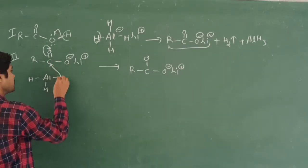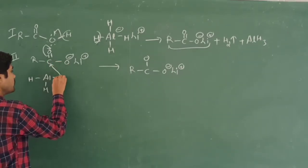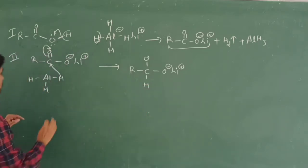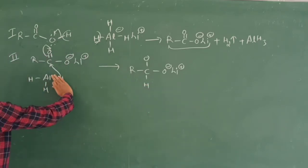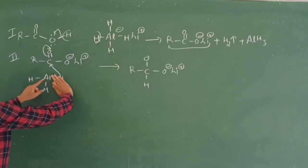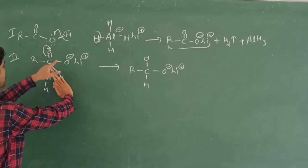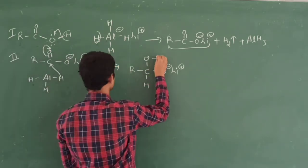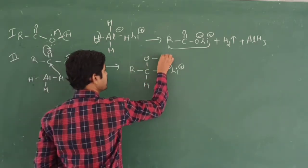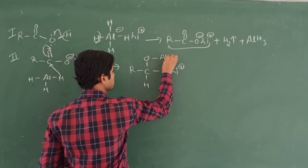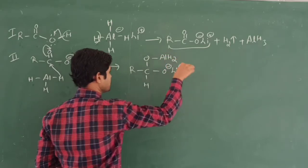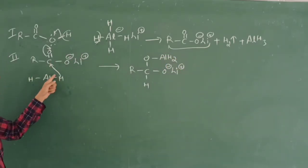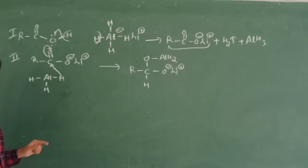The hydrogen comes and attacks the carbonyl carbon. What remains is aluminium with two hydrogens, written as AlH₂, bonded with oxygen. This process is called nucleophilic addition of the hydride ion.